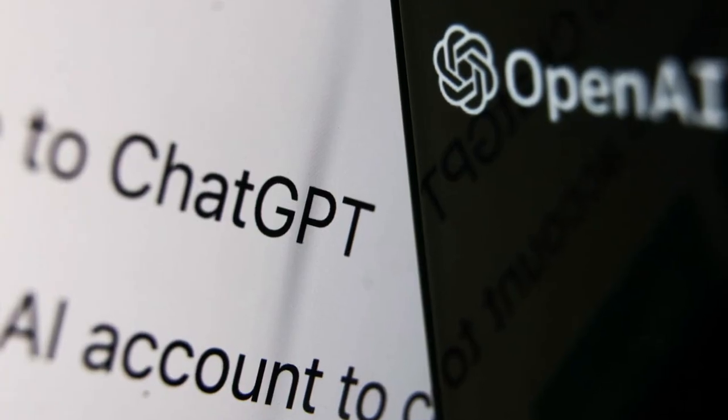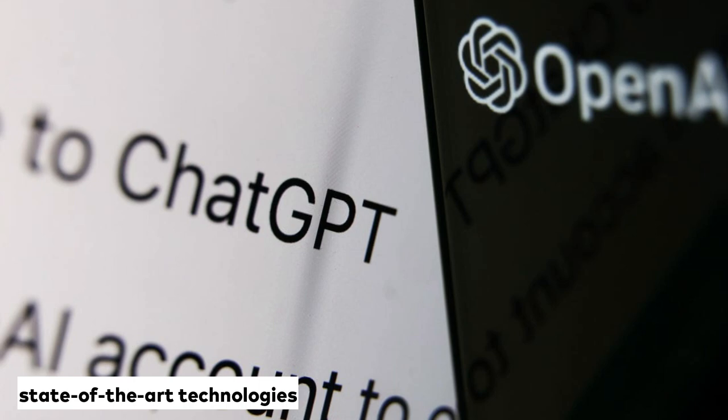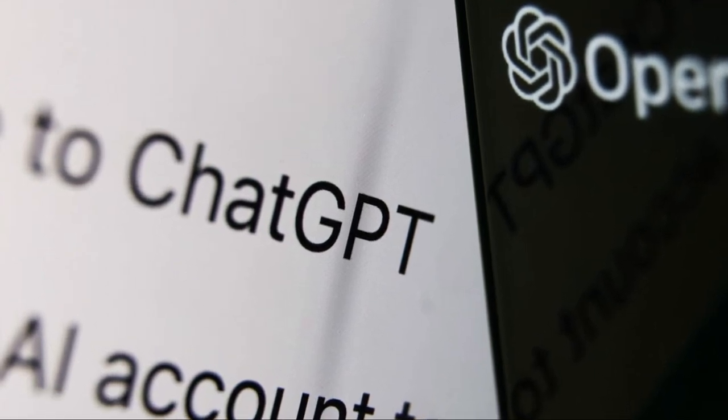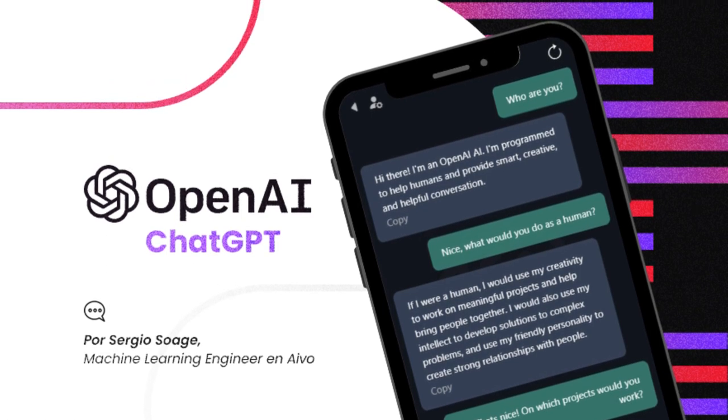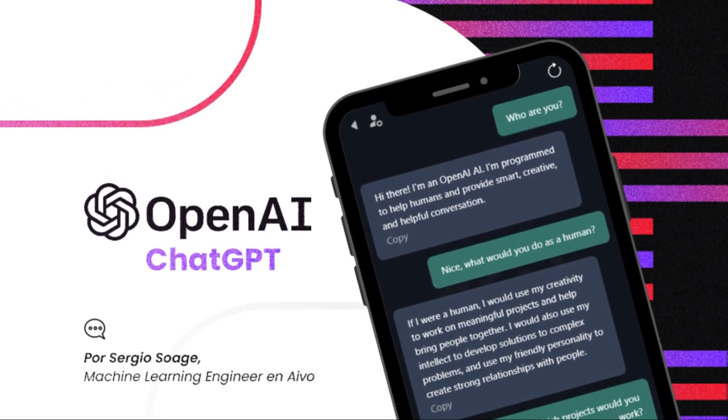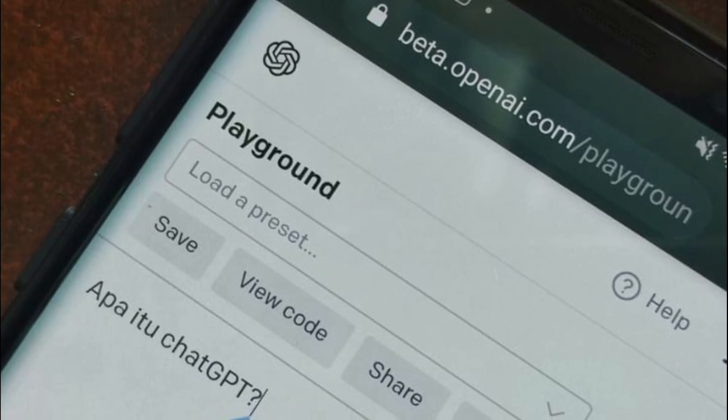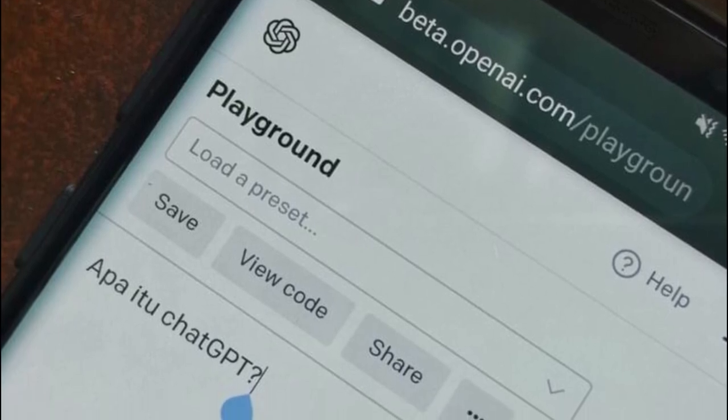ChatGPT and NLP. ChatGPT is built on several state-of-the-art technologies, including natural language processing NLP, machine learning, and deep learning. These technologies are used to create the model's deep neural networks and enable it to learn from and generate text data.